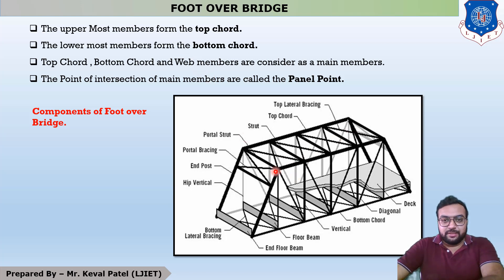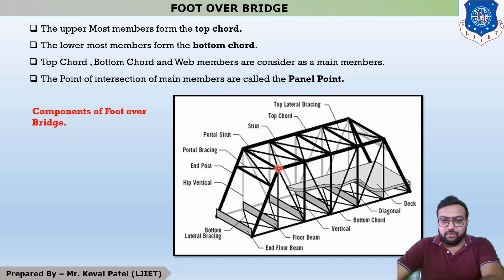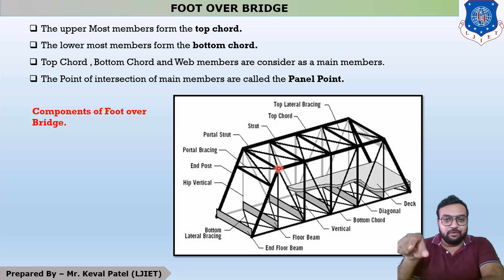You can see that the topmost portion of the foot over bridge is called the top chord. The bottommost portion is the bottom chord, and this is the junction point. The junction point is where the top chord, vertical member, and diagonal member meet; similarly, the bottom chord, vertical member, and diagonal member meet. This junction point is called a panel point. This completes the second theory on components of foot over bridge.